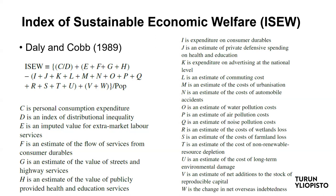These try to capture public services better than GDP does. But there is also a large number of negative factors — everything on the right-hand side column is taken into account with a negative sign. These include, for example, defence spending, advertising, commuting costs, automobile accidents, water pollution, air pollution, and so on. These expenditures do not increase sustainable economic welfare, according to the authors.